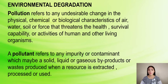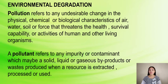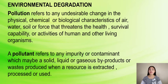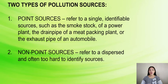Now let's talk about environmental degradation. Pollution refers to any undesirable change in the physical, chemical, or biological characteristics of air, water, soil, or food that threatens the health, survival, or activities of humans and other living organisms. A pollutant refers to an impurity or contaminant — solid, liquid, or gaseous — produced when a resource is extracted, processed, or used. Pollutants can be natural, such as volcanic ash, or created by human activity, such as trash or factory runoff. There are two types of pollution sources: point sources, which refer to a single identifiable source such as a smokestack of a power plant, drain pipe of a meat-packing plant, or exhaust pipe of an automobile; and non-point sources, which refer to dispersed and often hard-to-identify sources such as pollution coming from many places at once.